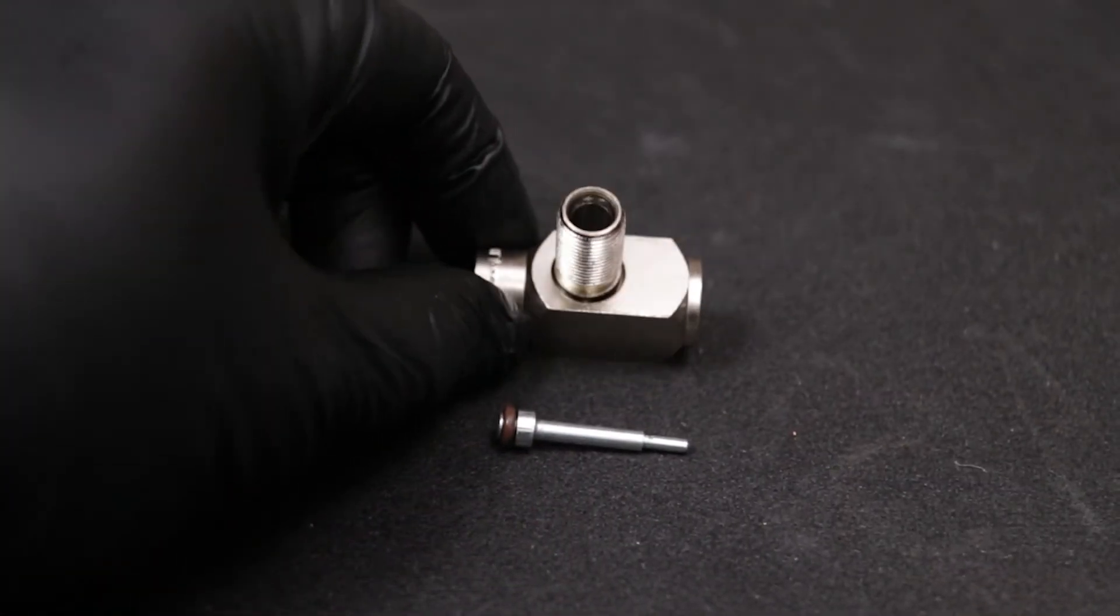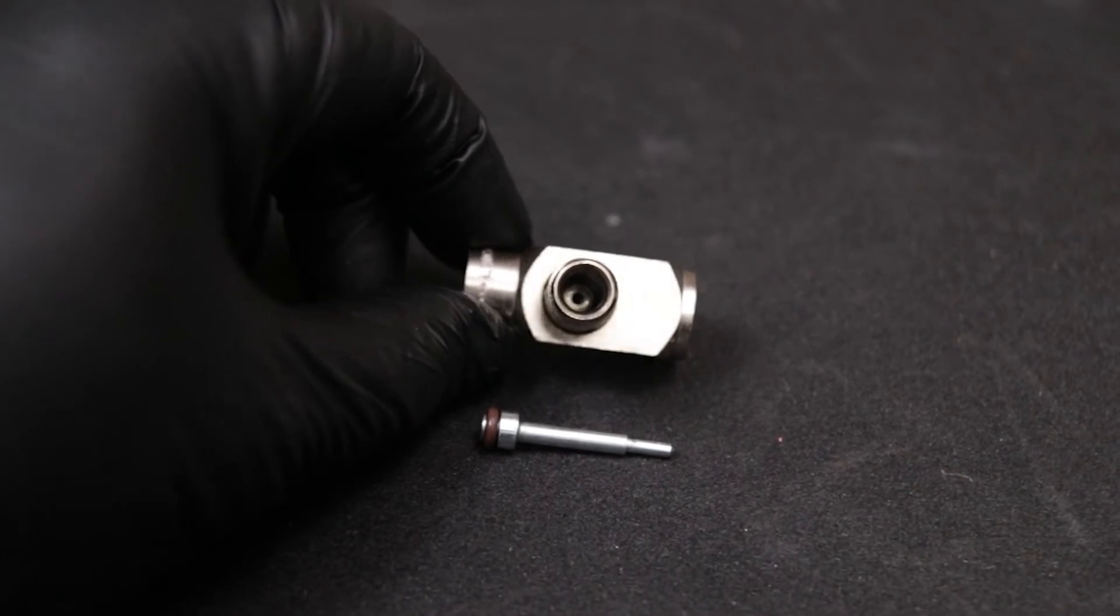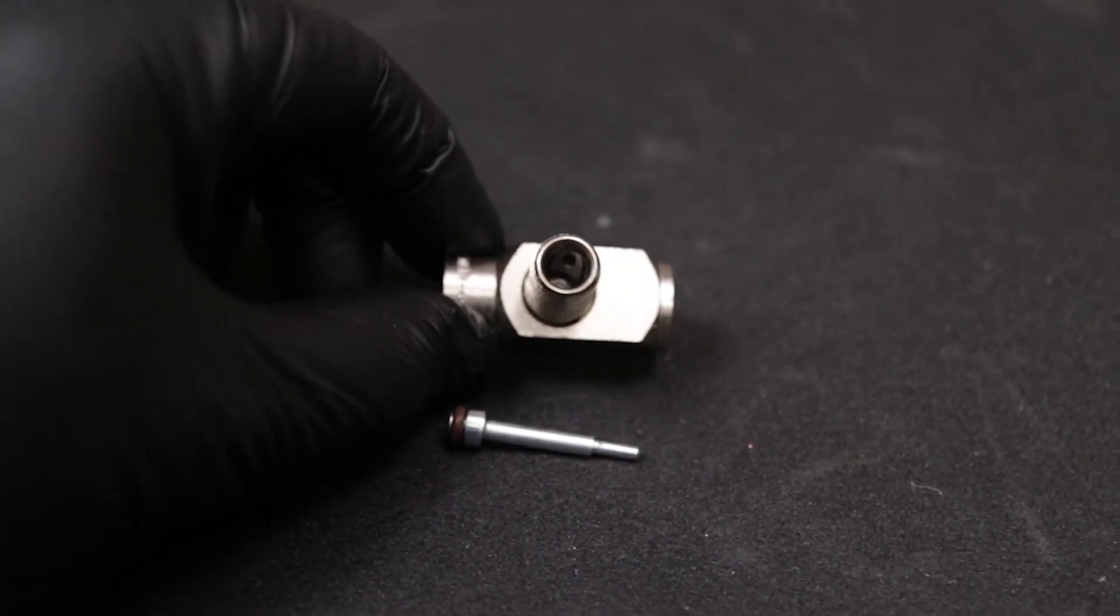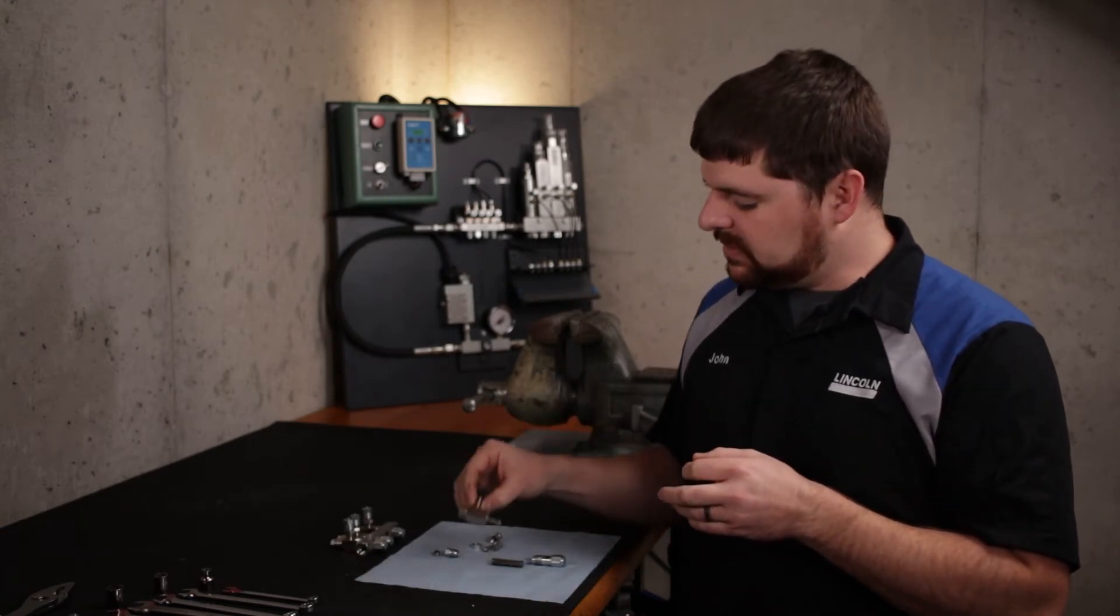This is also the same for the measuring chamber. Leakage due to pitting or scratching may occur in this location. Replace the injector if any damage is found.